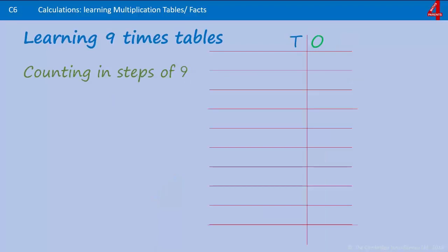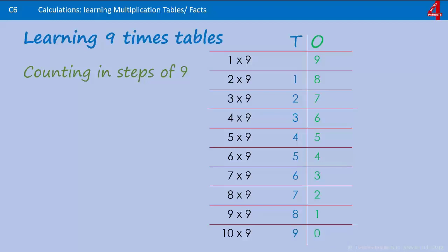Something else that's interesting about counting in steps of nine. First one is nine, eighteen, twenty-seven, thirty-six, forty-five, fifty-four, sixty-three, seventy-two, eighty-one and ninety. One of the first things you might notice is that in the ones column, we start at nine, and then the next multiple of nine goes down one, until you get to ten times nine, where the one is a zero.